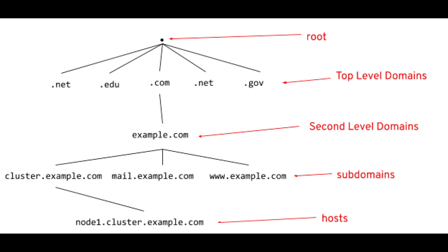Root server contains a global list of top level domains and sits at the top. It is the first step in resolving a domain name. It answers requests for records in the root zone and answers all requests by returning a list of authoritative name servers for the appropriate top level domain.